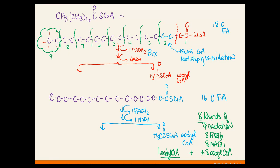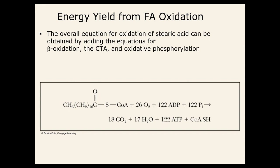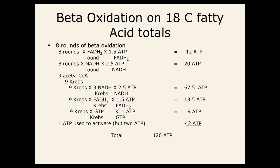FADH2 and NADH go to the electron transport chain. The nine acetyl-CoAs go to the citric acid cycle. Now, if we want to do some math: from eight rounds of beta-oxidation, eight FADH2 and eight NADH are formed, and nine acetyl-CoAs total.